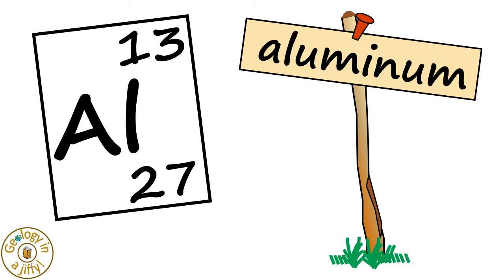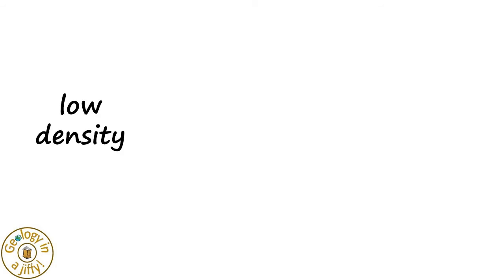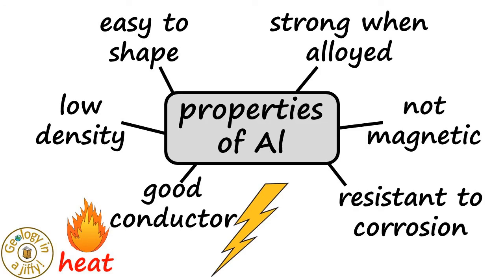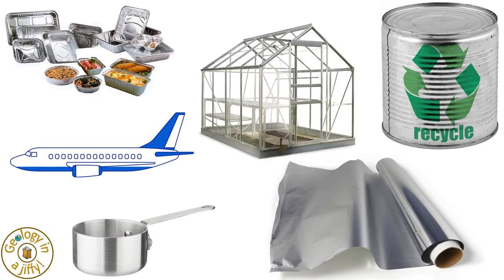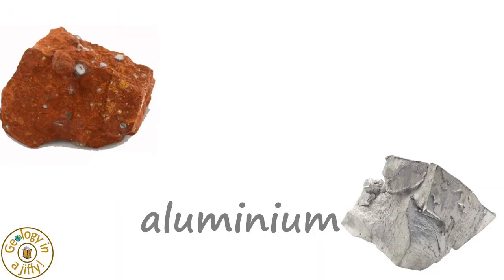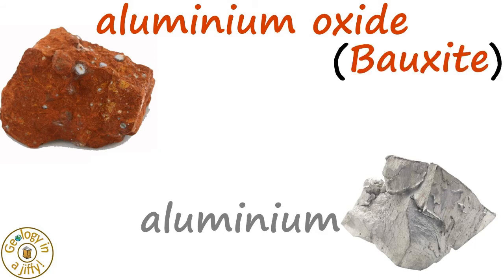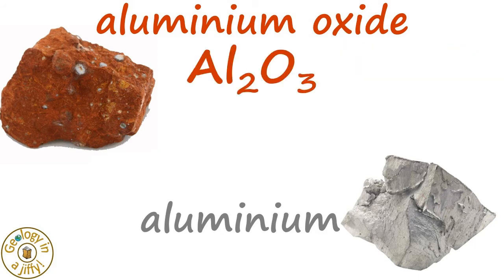Aluminium is a light grey colored, low density metal with a range of properties that makes it very useful for us to use. Aluminium is extracted from its ore called aluminium oxide or bauxite with the formula Al2O3.